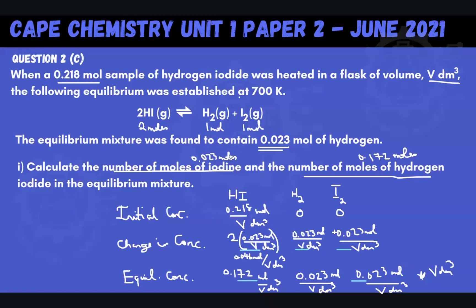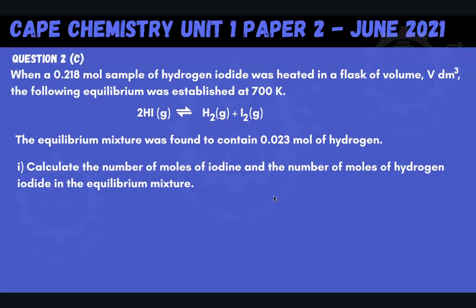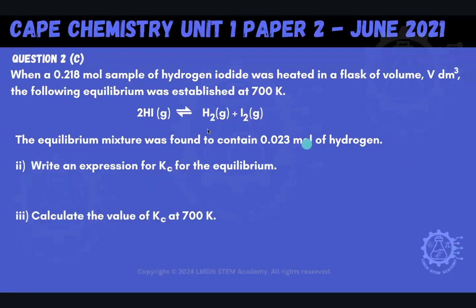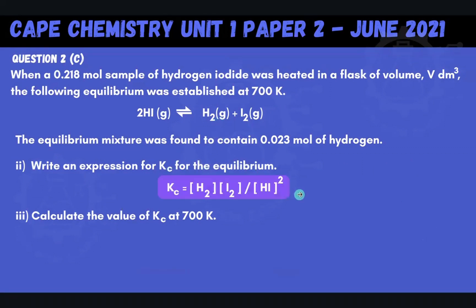Now we move on to part two: write an expression for Kc, the equilibrium constant in terms of concentration. My Kc expression has the concentrations of my products on top — H₂ times I₂ — divided by the concentration of my reactant HI squared, because there's a coefficient of 2 in front of HI.